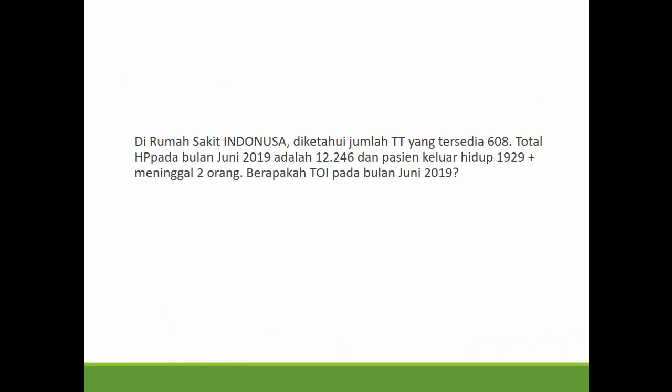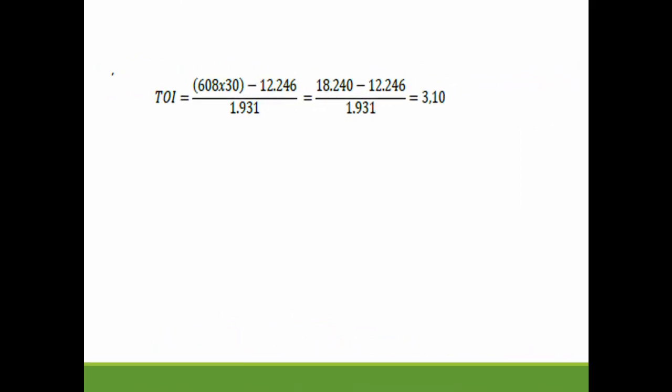Di rumah sakit Indonesia, jumlah tempat tidur tersedia 608. Total HP pada bulan Juni 2019 adalah 12.246, dan pasien keluar hidup 1.929 ditambah pasien meninggal sebanyak 2 orang. Berapa TOI pada bulan Juni 2019? Maka: (608 × 30 - 12.246) ÷ 1.931 = TOI 3,1 hari. Hampir ideal. Kesimpulannya, tempat tidur di rumah sakit ini mungkin jarang digunakan atau pasien rawat inap sedikit, sehingga angkanya lebih dari 3 hari.